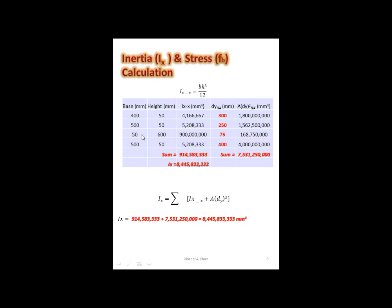We have all rectangular shapes, so base times height cubed divided by 12. I've defined the base and height of each shape, so I'm going to take base times 50³ divided by 12, giving me 4,166,667 — and I do that all the way down and summate it. Then I take my dy for shape 1, square it, because the formula uses A·dy². For shape 1: 300² times 20,000 gives 1,800,000,000.